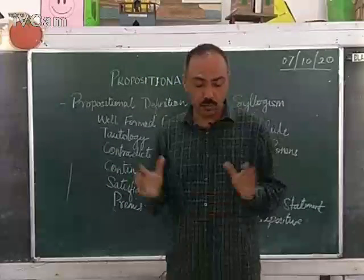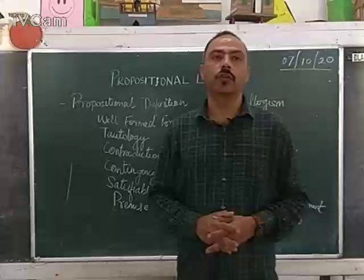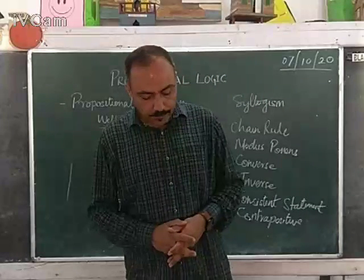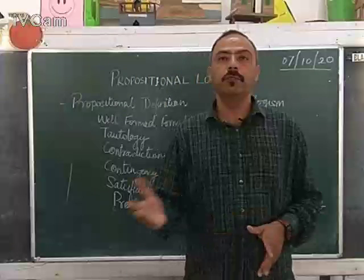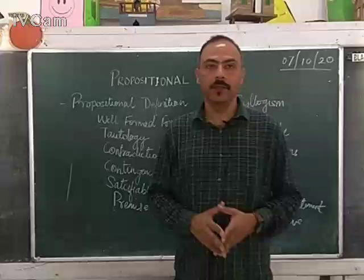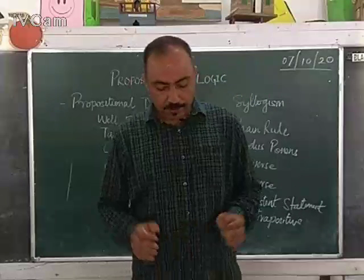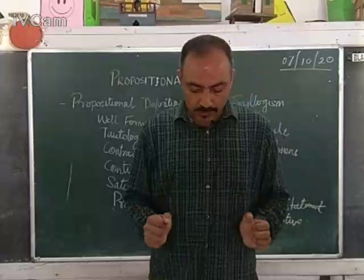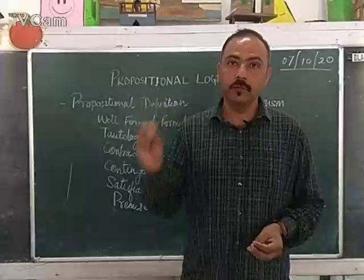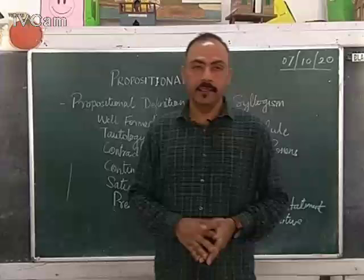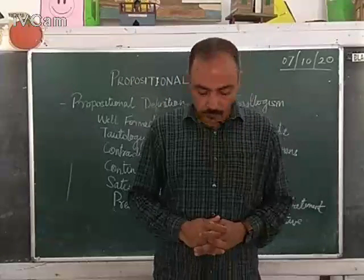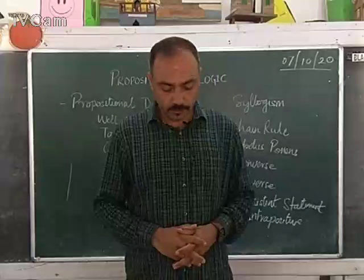Contradiction is the opposite of tautology. In a proposition, if all the statements always come out as false, then it is called a contradiction. A contradiction has only false values in the truth table.